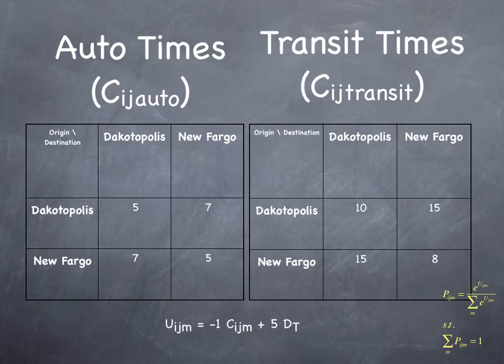As you can see, intrazonal trips in Dakotopolis, cell 1-1 on the left matrix, are 5 minutes. Trips from Dakotopolis to New Fargo are 7 minutes. Trips from New Fargo to Dakotopolis are also 7 minutes, and intrazonal trips in New Fargo are 5 minutes, all by automobile. By transit, the travel times are somewhat higher. Intrazonal trips in Dakotopolis are 10 minutes, trips from Dakotopolis to New Fargo are 15 minutes, from New Fargo to Dakotopolis are also 15 minutes, and intrazonal transit trips in New Fargo are 8 minutes.